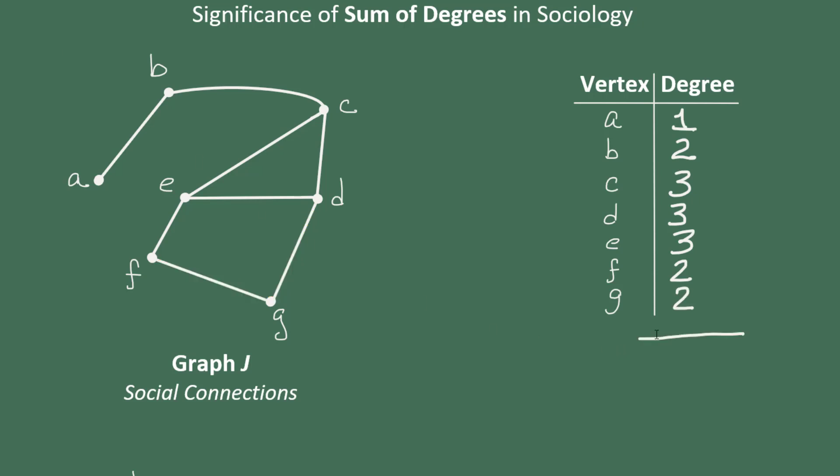So let's find the sum. We have one and two is three, and three is six, and three is nine, and three is twelve, and two is fourteen, and two would be sixteen. So there are sixteen connections between an edge and a vertex in this graph.